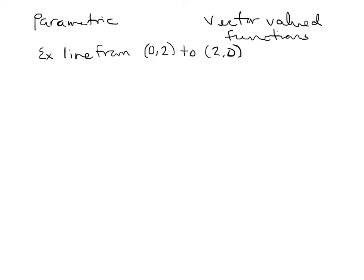For parametric equations, one way you could do this is find the parallel vector by taking the endpoint and subtracting the start point. For the x component, I'd do 2 minus 0, giving 2. For the y component, I'd do 0 minus 2, giving negative 2. Parametric equations are an x equals, a y equals, and a z equals if necessary — but this is just two-dimensional for my simple example.